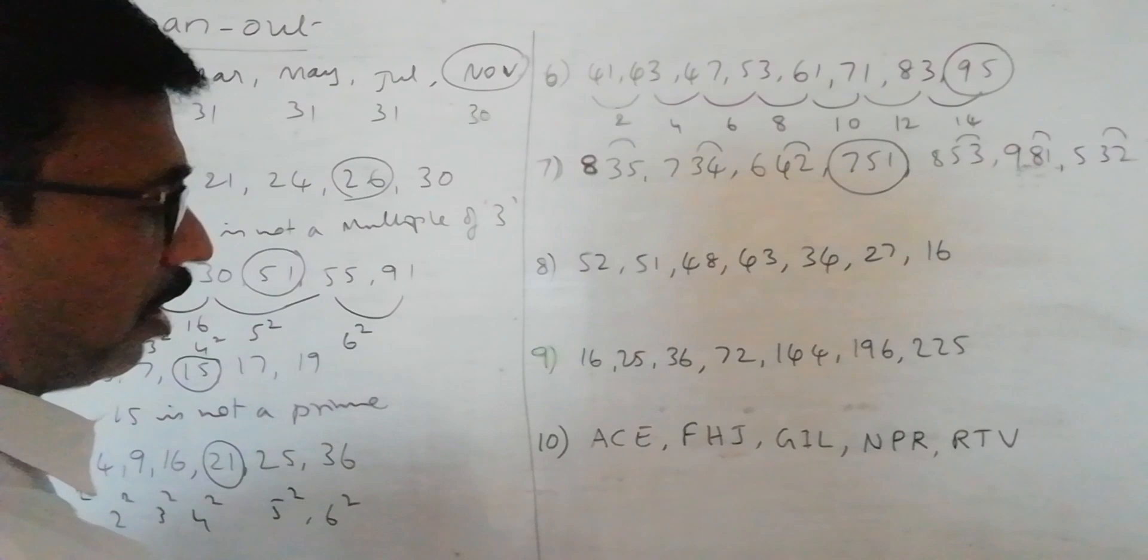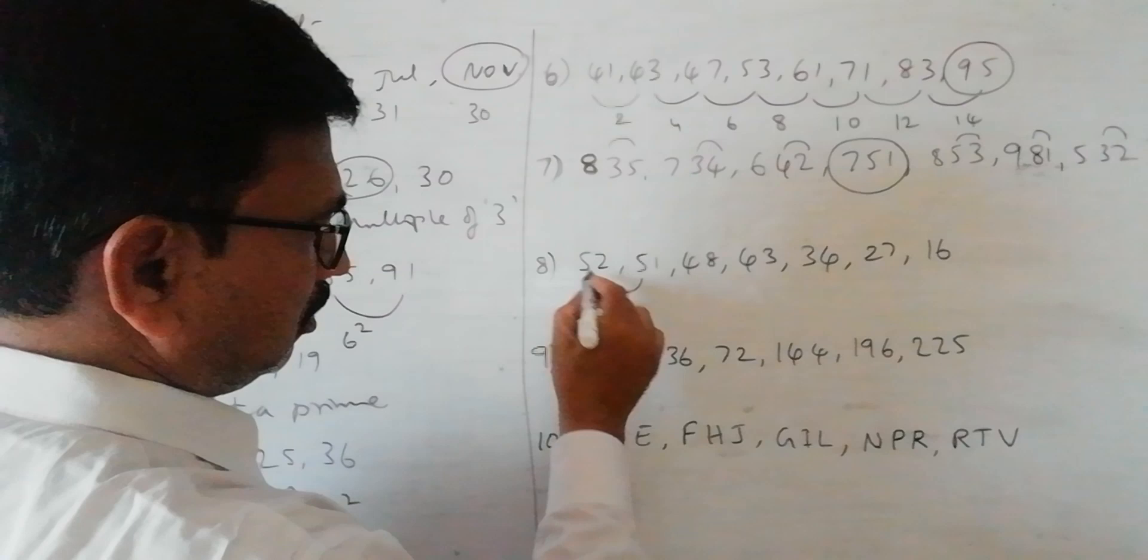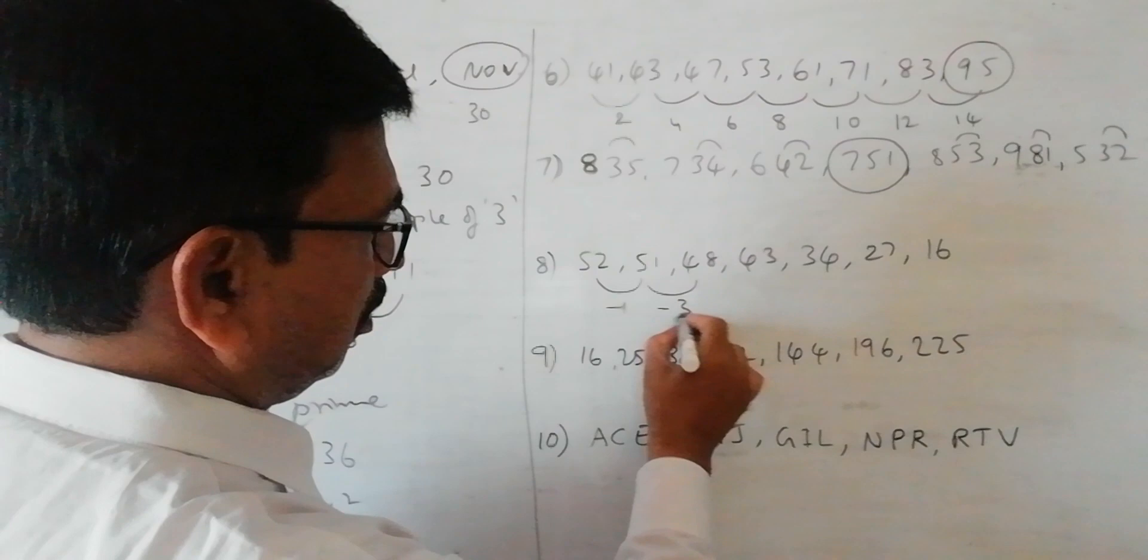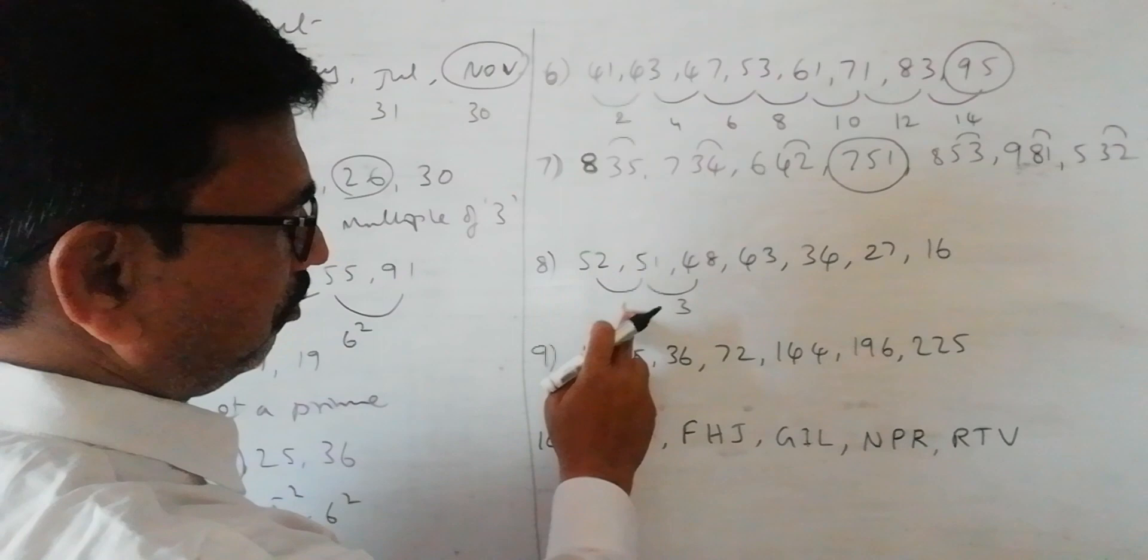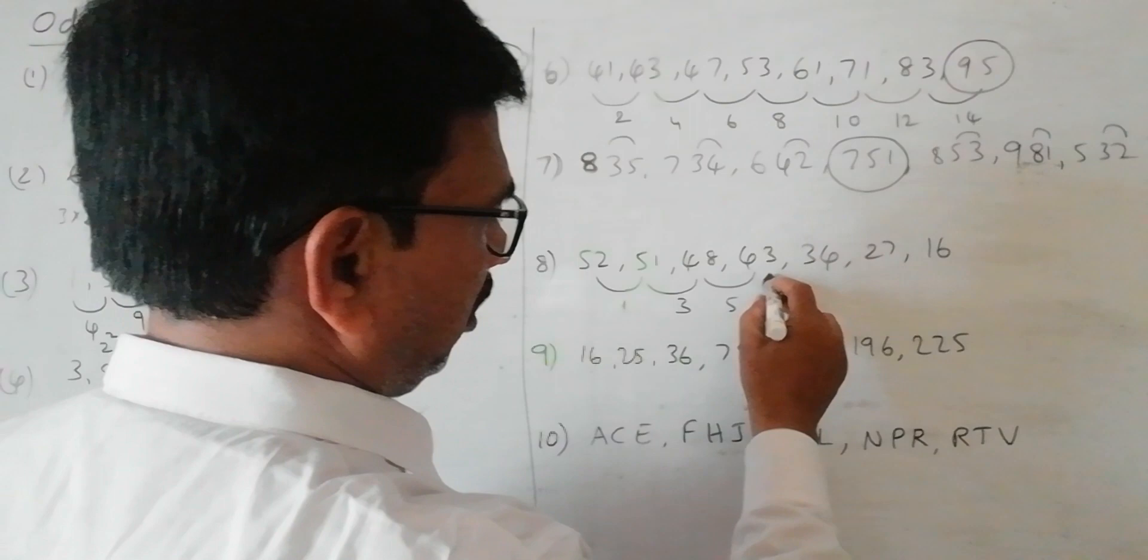And moving on to the next problem, we have 52, 51, 48, 43. Here the numbers are in descending order. Now if you take the difference, minus 1, this is 51 minus 48, it is 3. So 52 minus 51 is 1, 51 minus 48 is 3, 48 minus 43 is 5. So the next difference should be 7. So 43 minus 7, it should be 36. So this should be 36.